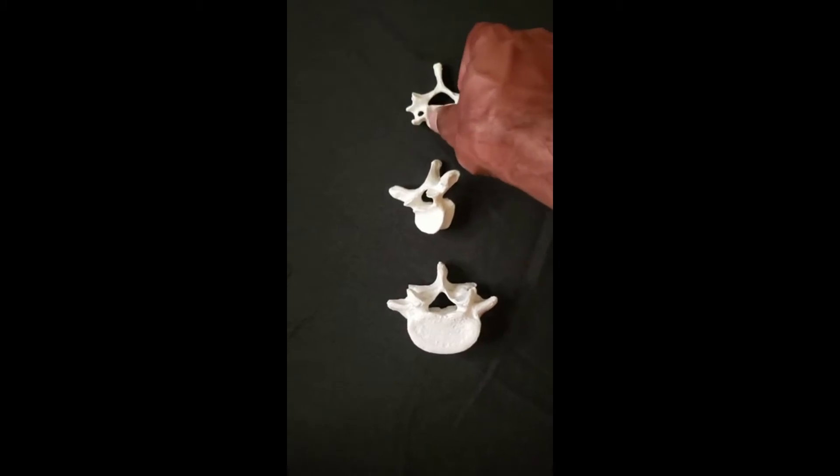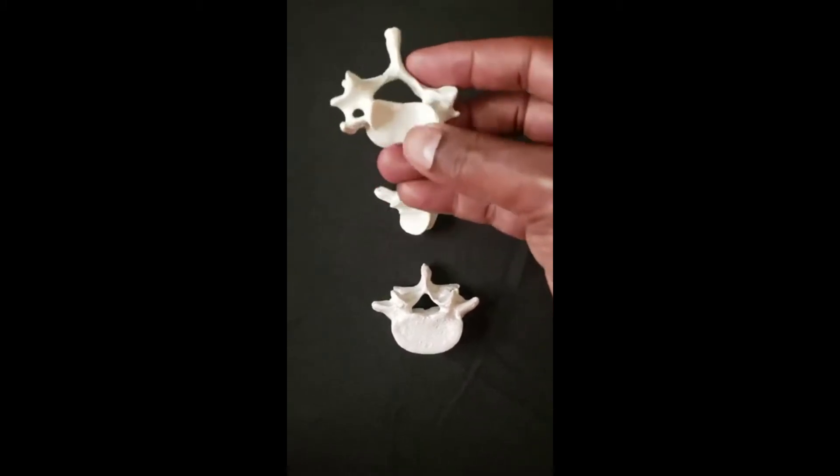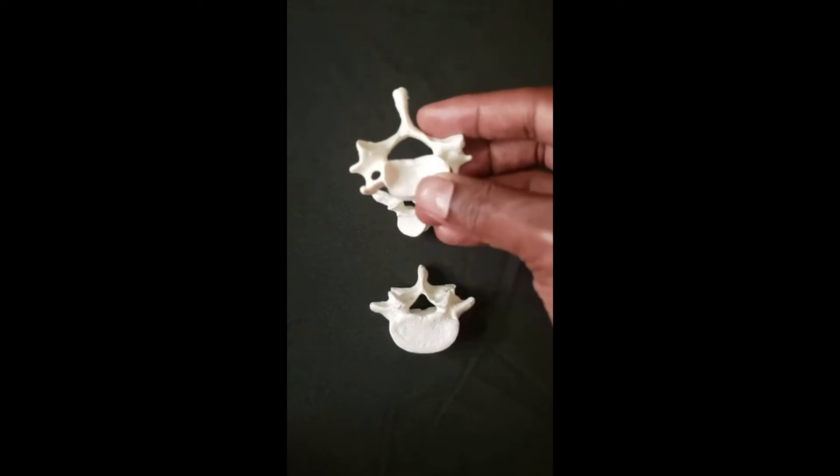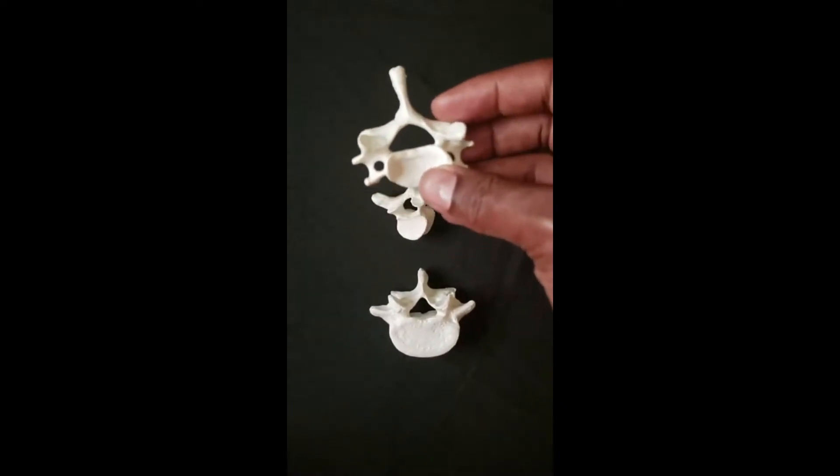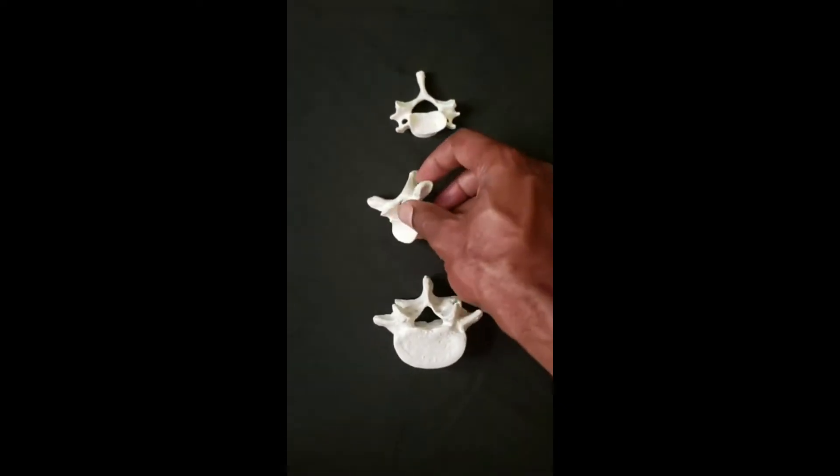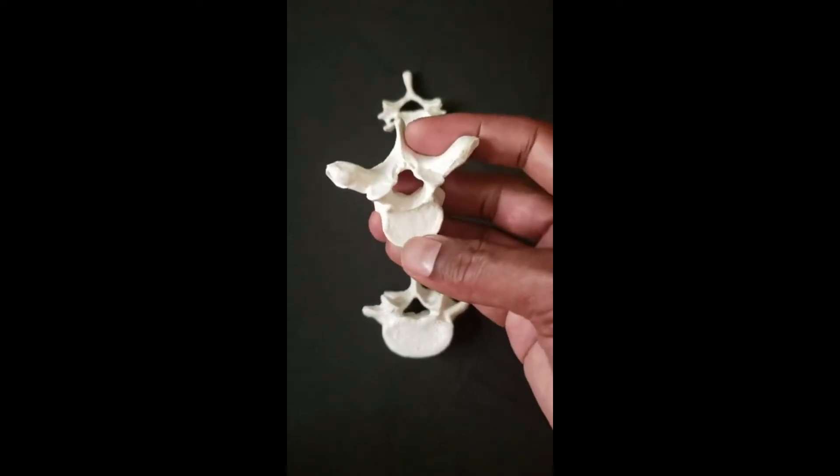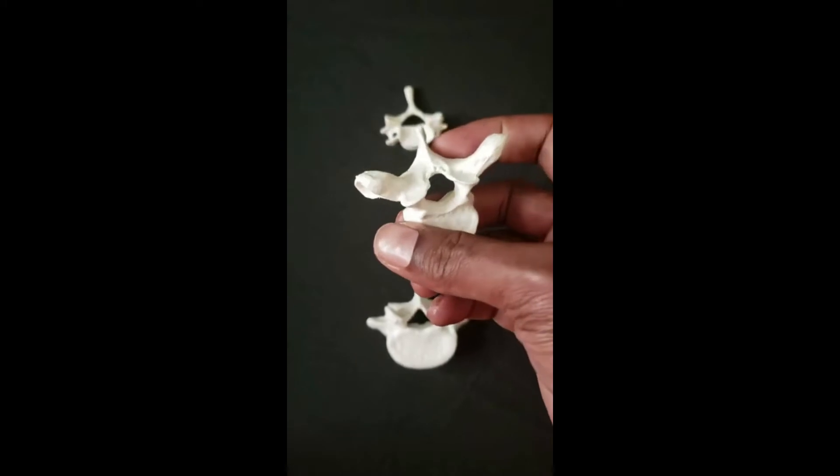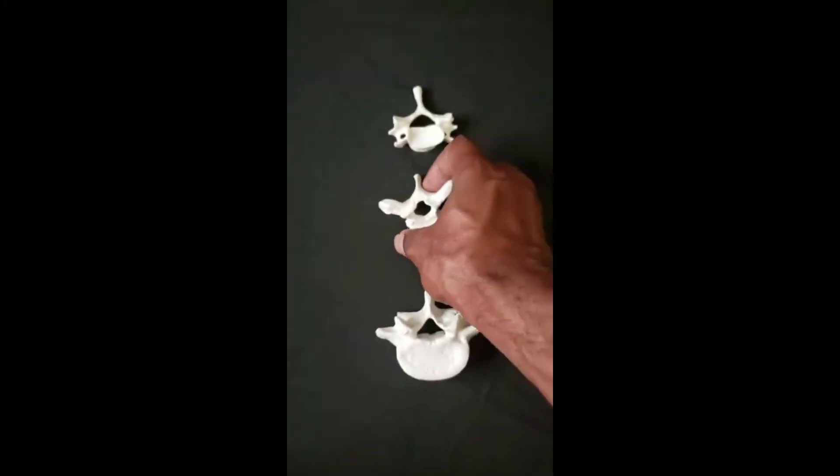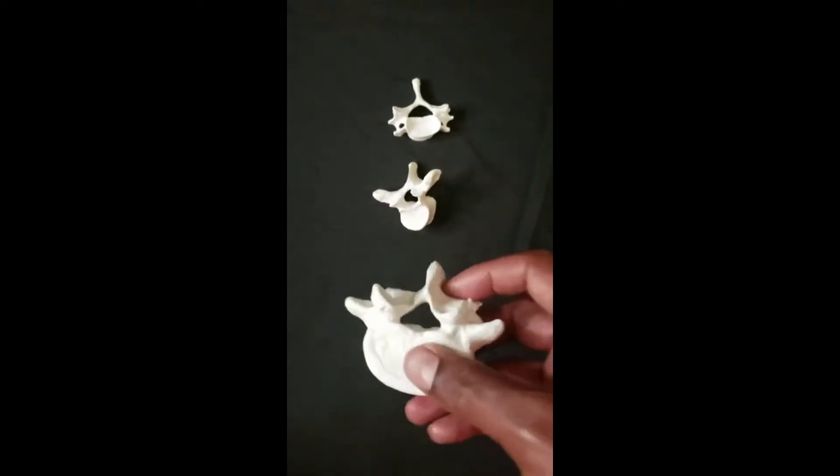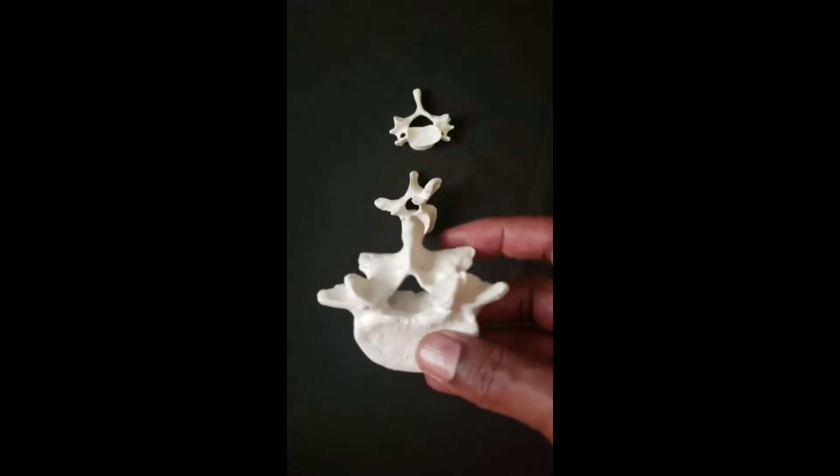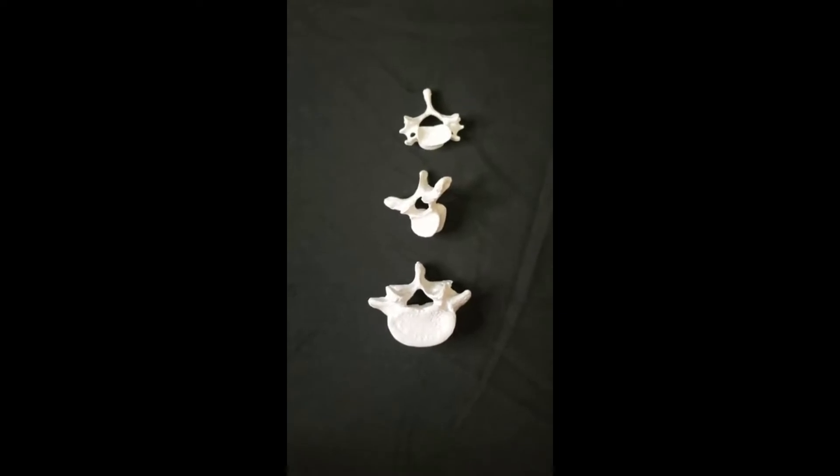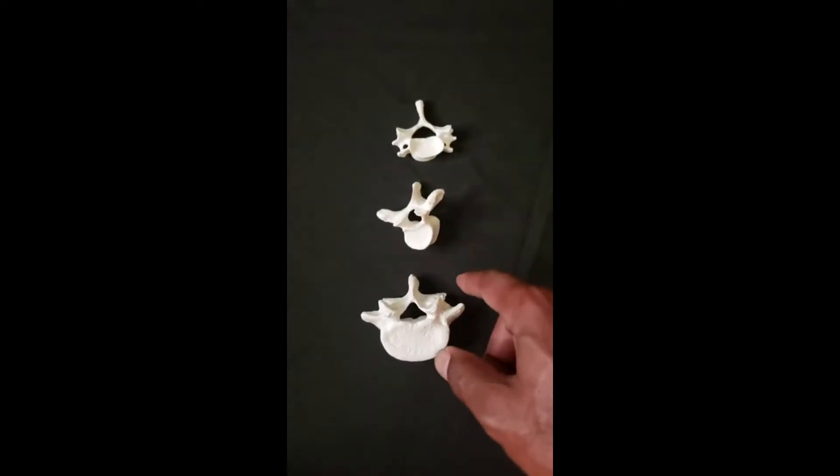Like you can tell from the name, cervical is going to be in your neck, providing strength and movement for your head and neck. Then you've got thoracic, which is located in the thoracic area of your body. And then you have the lumbar vertebrae, which is in the lower back or the lower part of your body cavity.